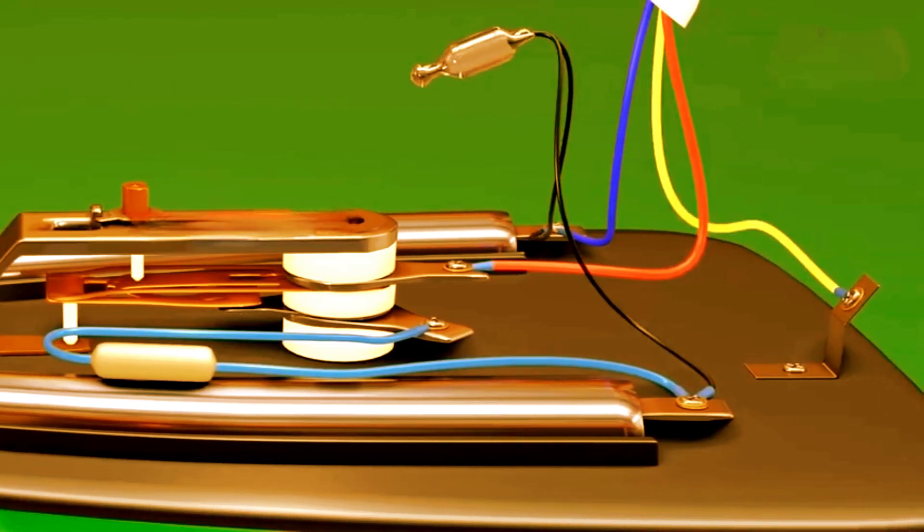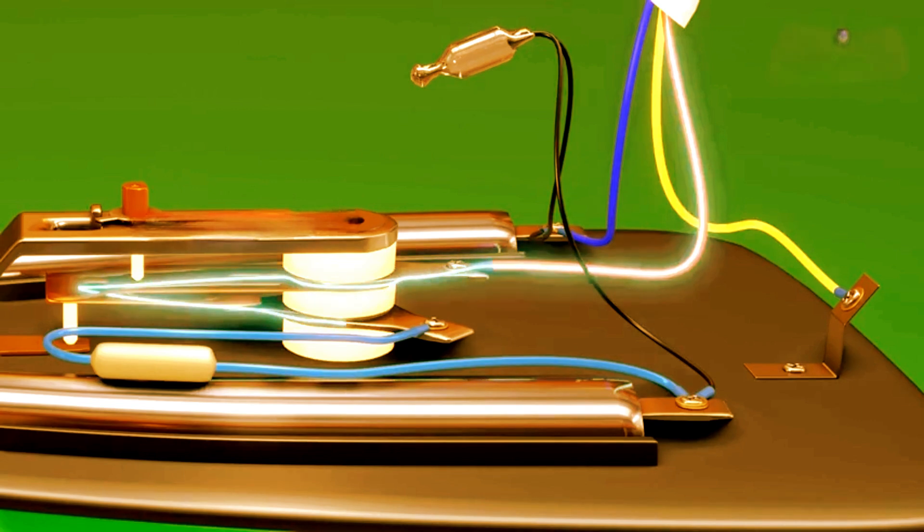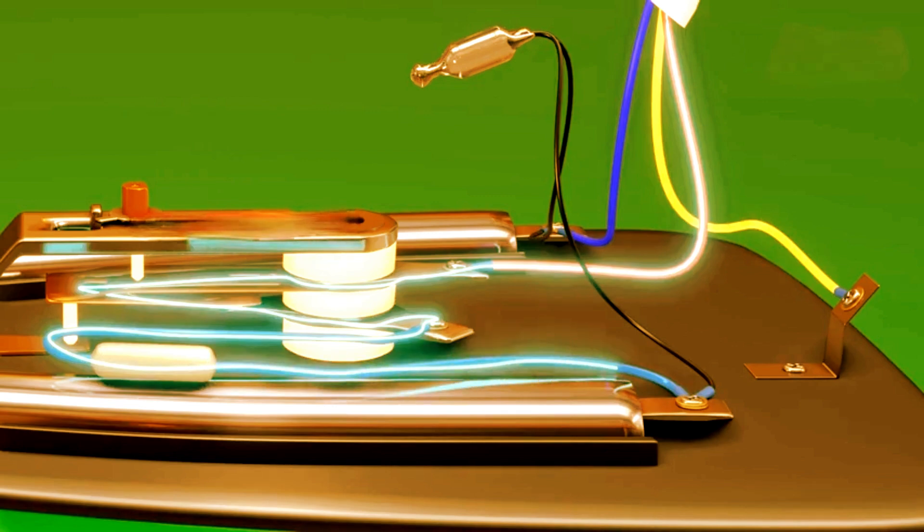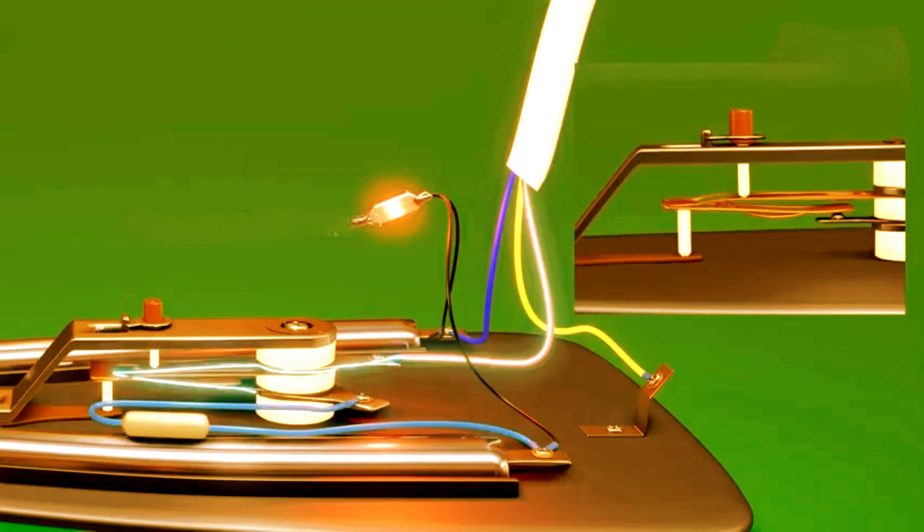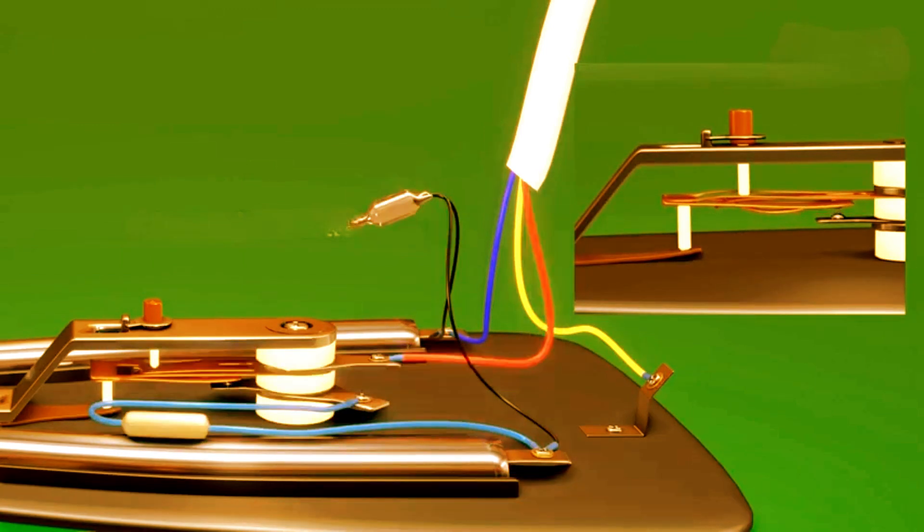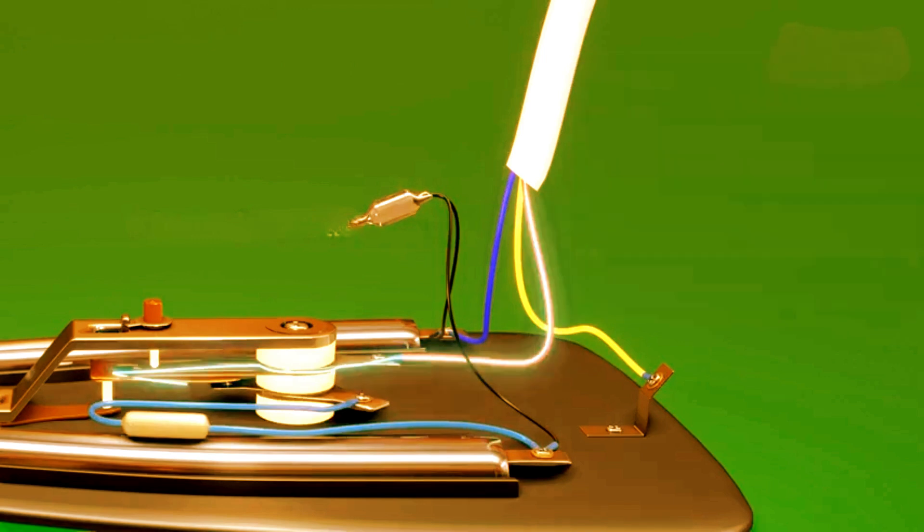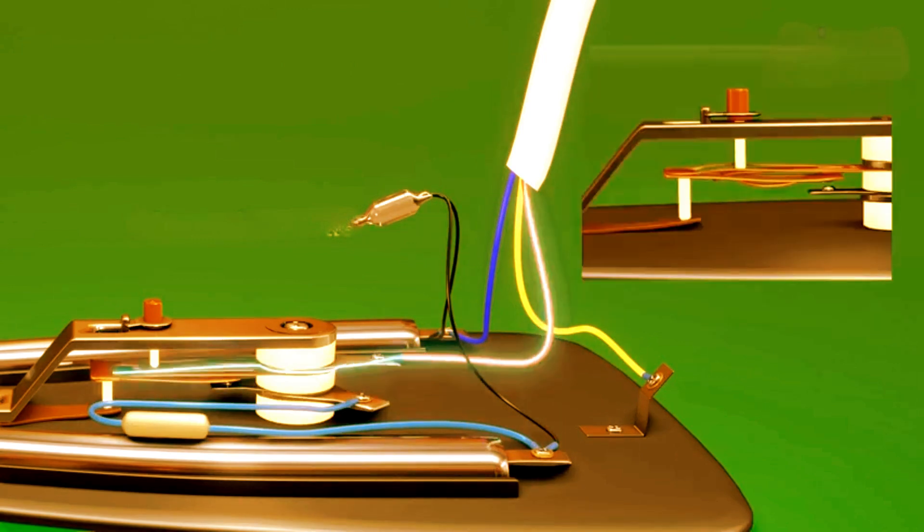Now I will show you how everything is connected. The phase wire is connected to the thermostat input. The neutral wire is connected to the heating element. The thermal fuse is connected to the thermostat and the heating element. The neon bulb shows the heating element is on and the earth wire is connected to the iron's body for safety.